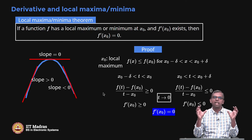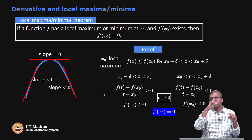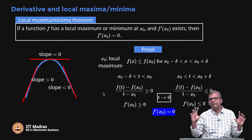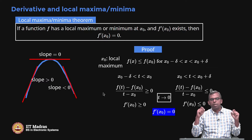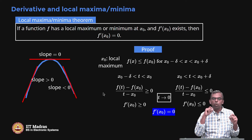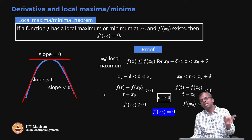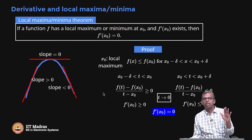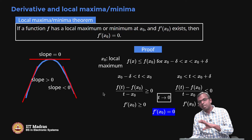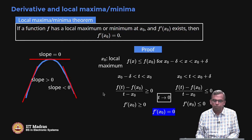Let us come back to the main result. It is important to understand and apply the result. When function f is given, to identify local minima or maxima, take the derivative and equate it to 0. Wherever the derivative is 0, those are the candidate points. Note the direction: if it is a local minimum or maximum then f′(x₀) = 0; and if f′ is 0, then it could be a local minima or maximum.